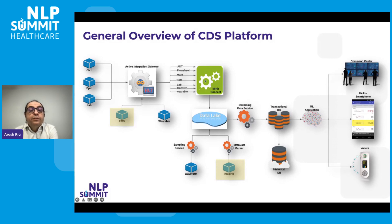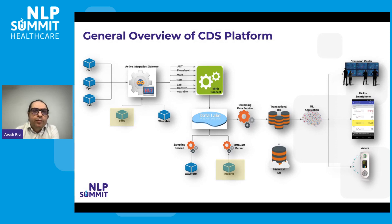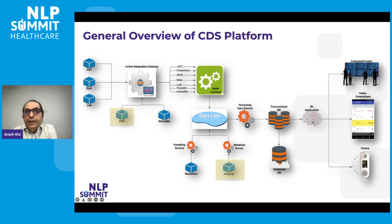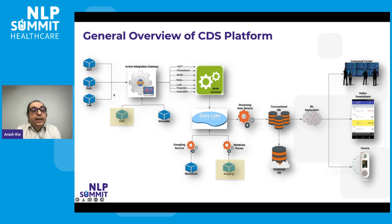We get all the HL7 messages, put them in our data lake and different streaming data services, which create different levels of single-view data at the patient and visit level depending on the use case. We then use machine learning applications to prepare data for the model, pass it to the model, generate predictions, and push it back to Epic for passive notification, or for active notification use a smart pager, smartphone application, Epic's Haiku app, or send it to the command center.